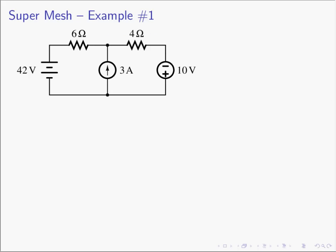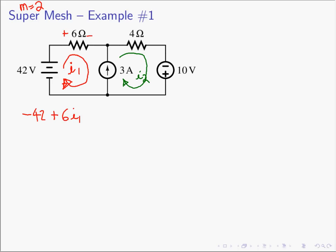Let's dive in and do an example. The first example is a circuit that does have a current source. Step one in mesh analysis: determine the number of mesh. If you look at this, it looks like a window pane, and M equals 2. I expect two equations and two unknowns. Step two: define our mesh currents consistently — all going clockwise. We'll call this mesh current I1, and the second mesh current I2. Now we write KVL for each mesh. Minus 42, then moving through the 6-ohm resistor gives a voltage drop of 6·I1. Then we come to the current source.